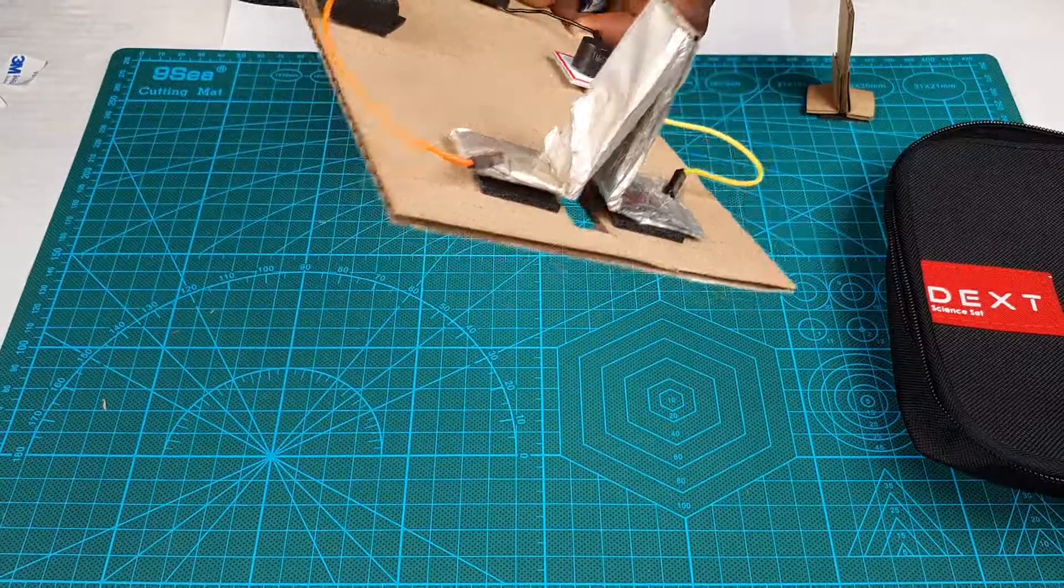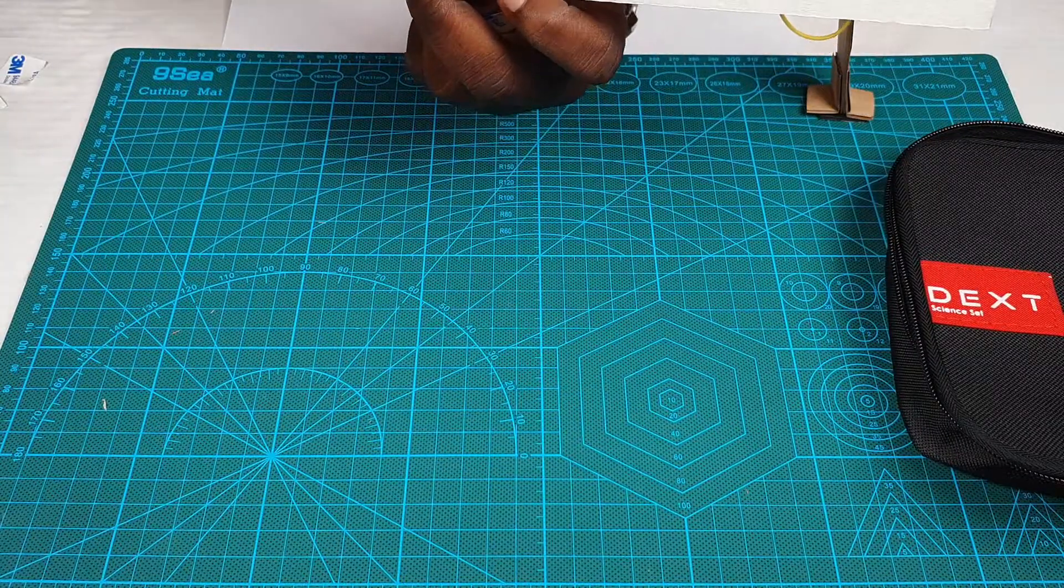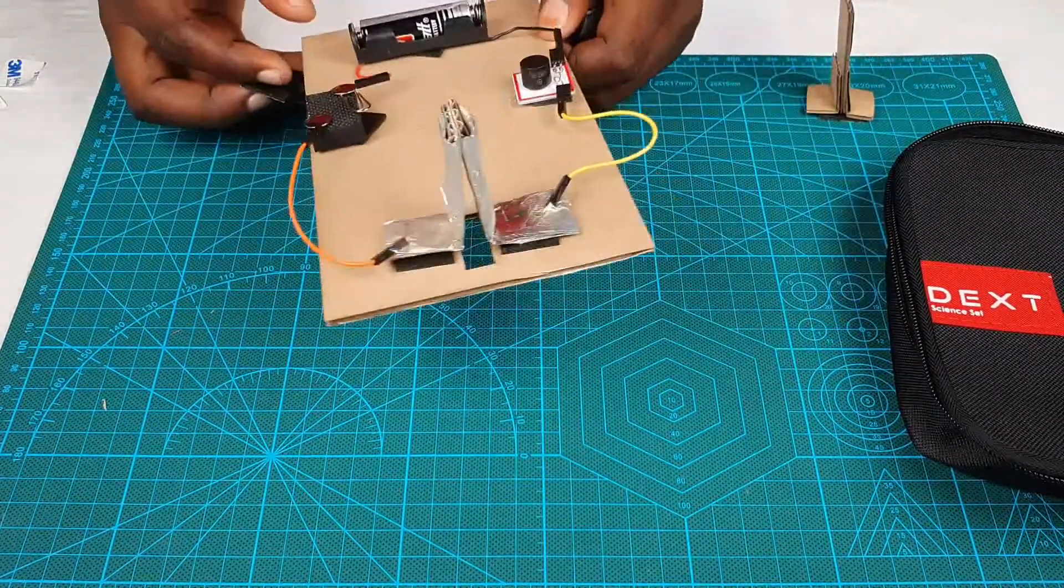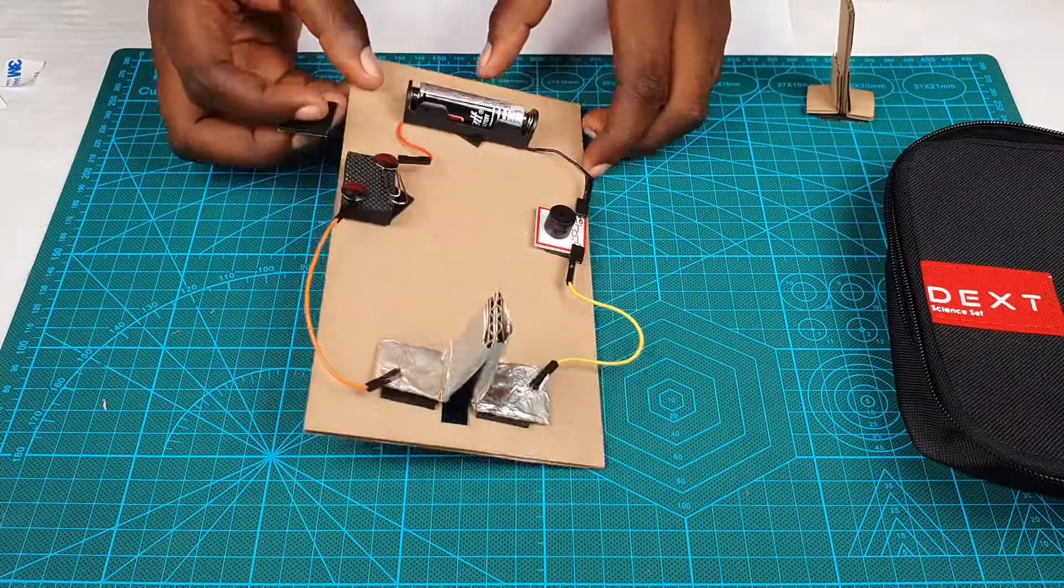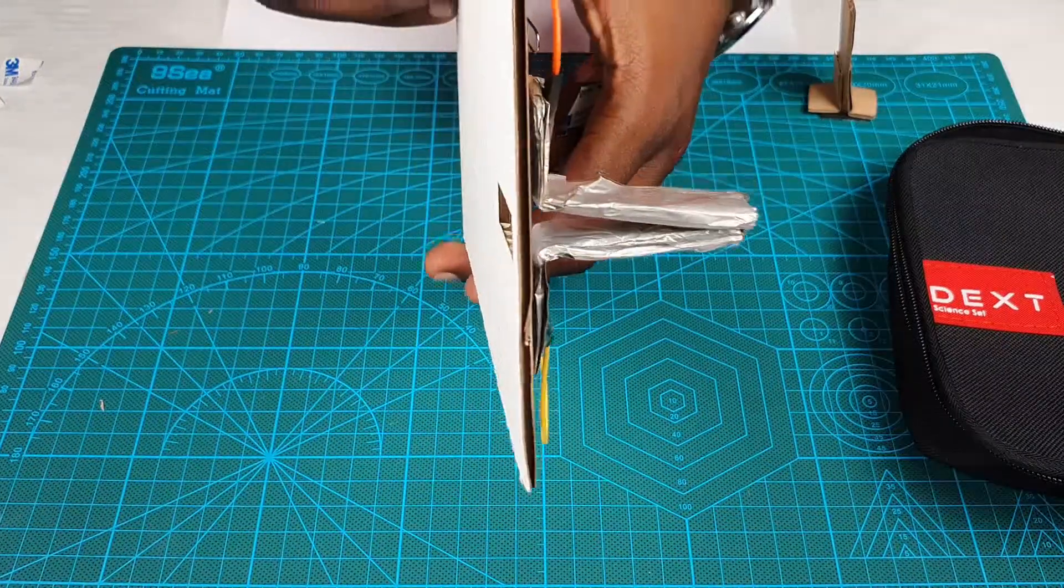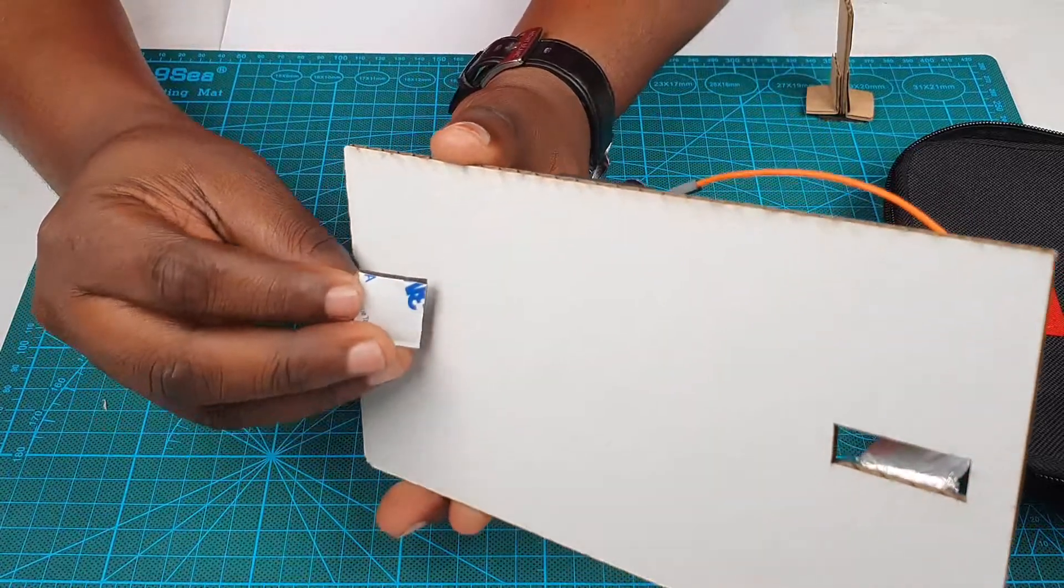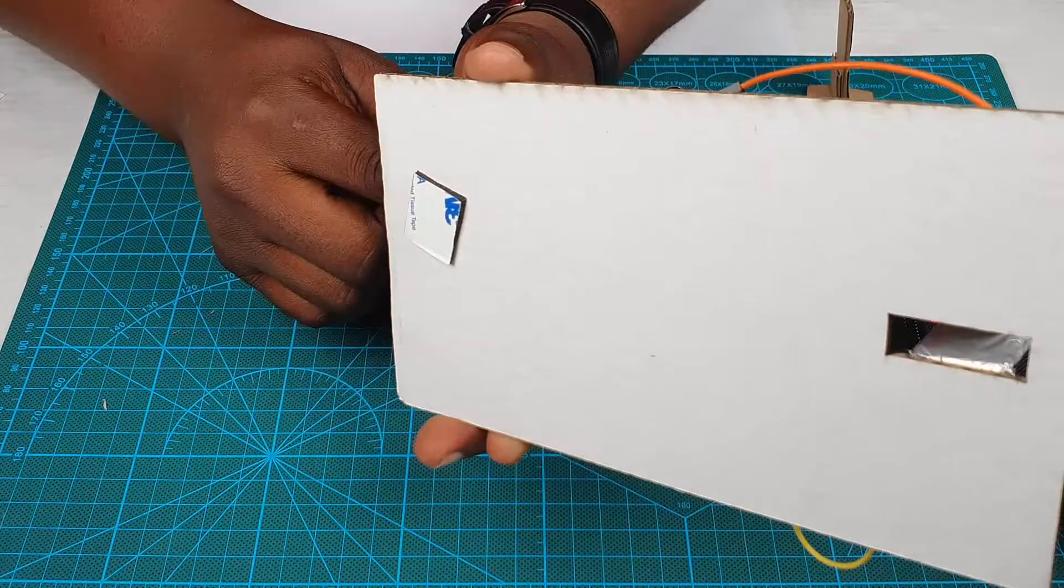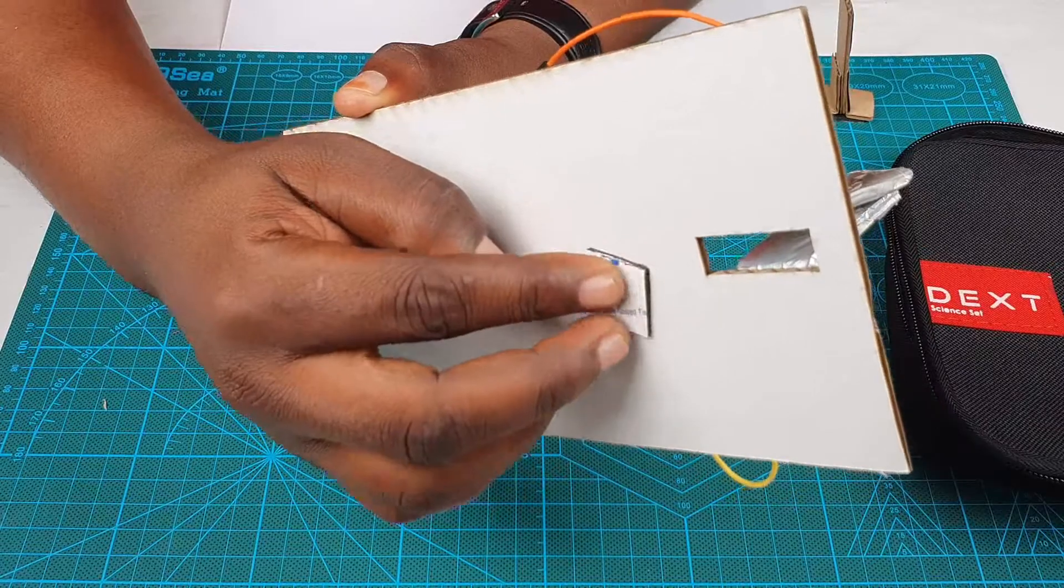Now, let's do the same thing for the part that goes on the swinging part of the door. Let's place our double sided tapes right behind it. Put one here and one there.